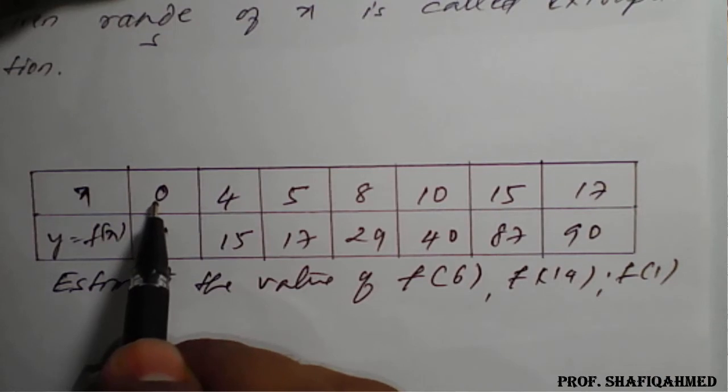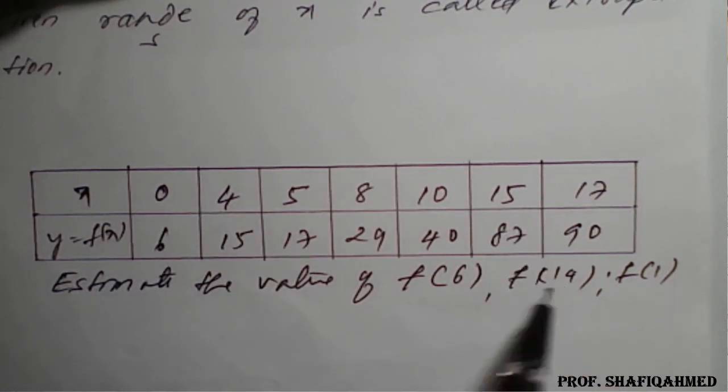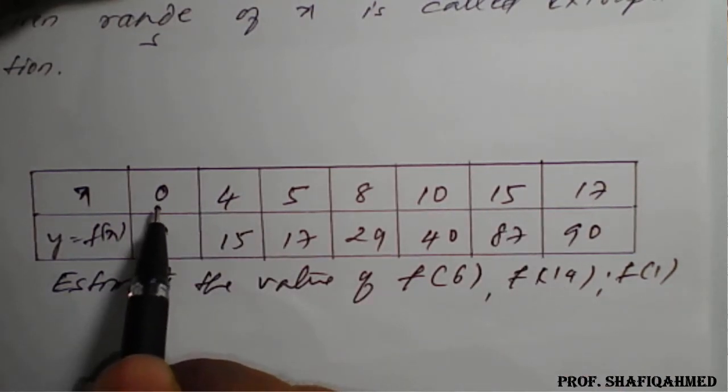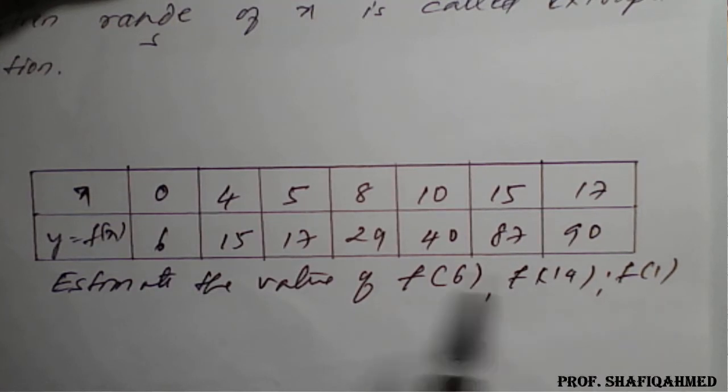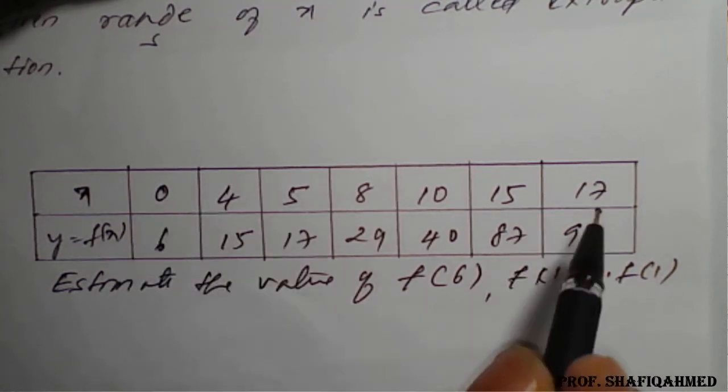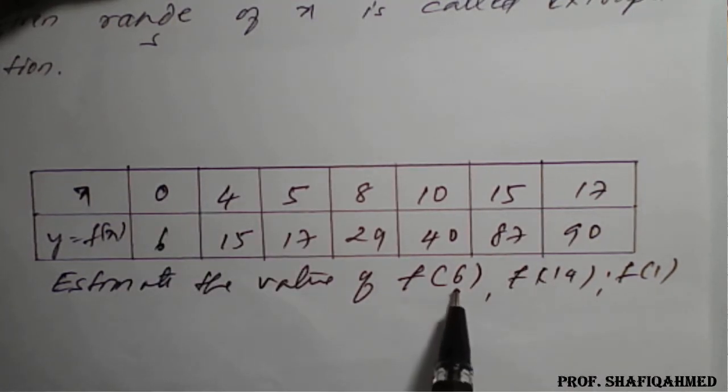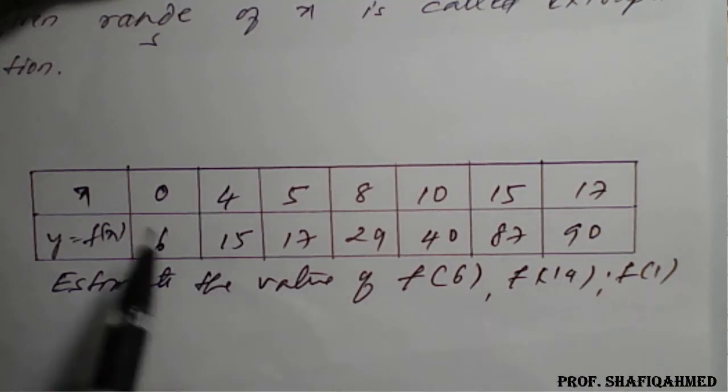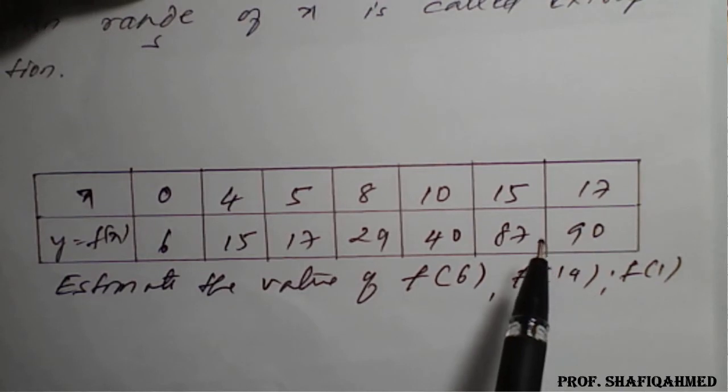6 is between 0 to 17 only, 14 also in between 0 to 17 only, f of 1, that is, 1 is also between 0 to 17 only. So, this f of 6, f of 14, f of 1, all are going to consider as interpolation.